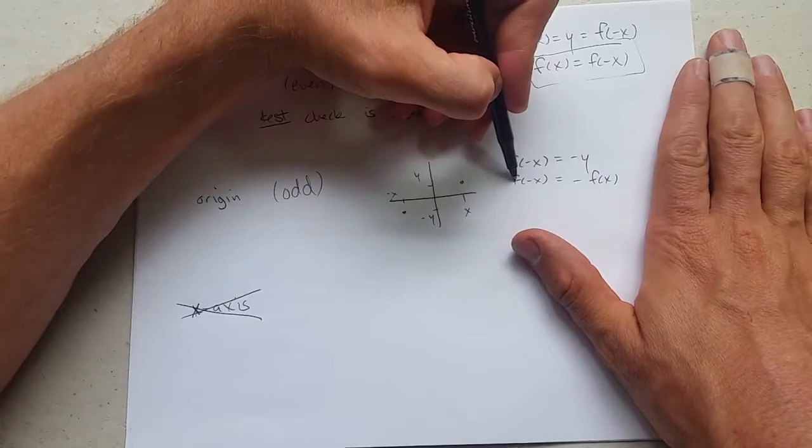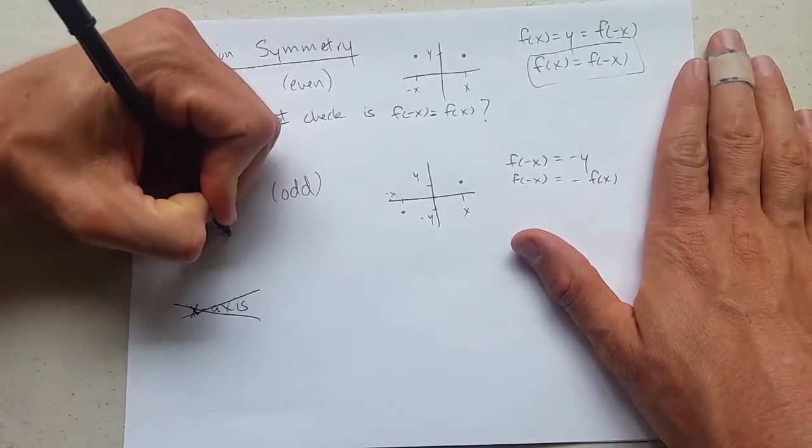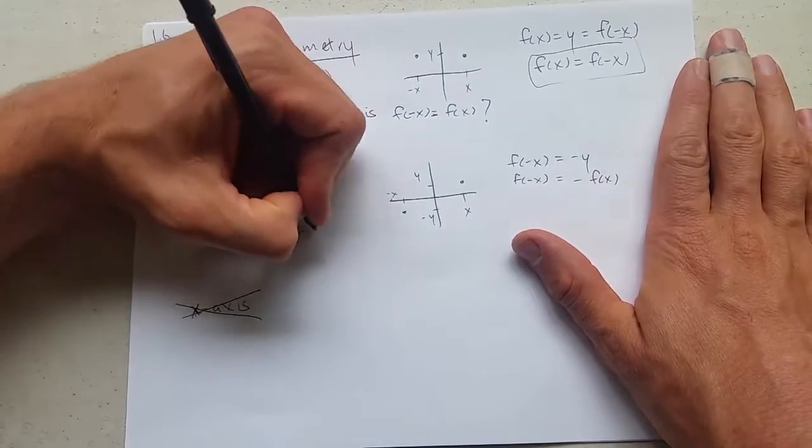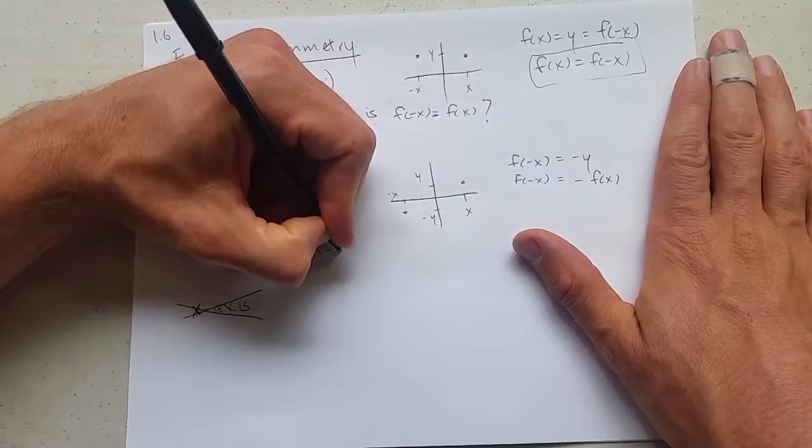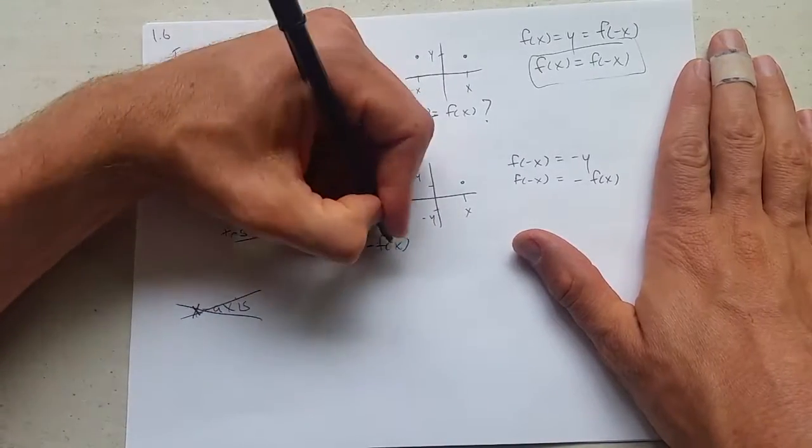So odd - if you plug in negative x, you should get out negative f of x. And our test we're going to check is f of negative x equal to negative f of x.